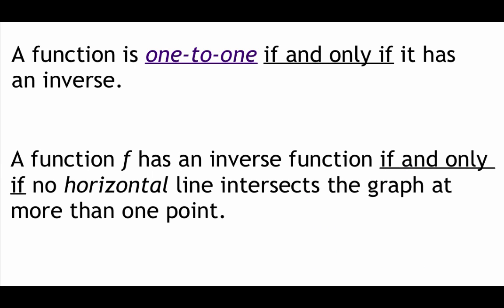A function is going to be one-to-one if and only if it has an inverse. One way we can check to see if a function has an inverse is by running the horizontal line test. If we can draw a horizontal line that intersects at more than one point, the function does not have an inverse. But if all horizontal lines intersect at one or fewer points, then our function will have an inverse.